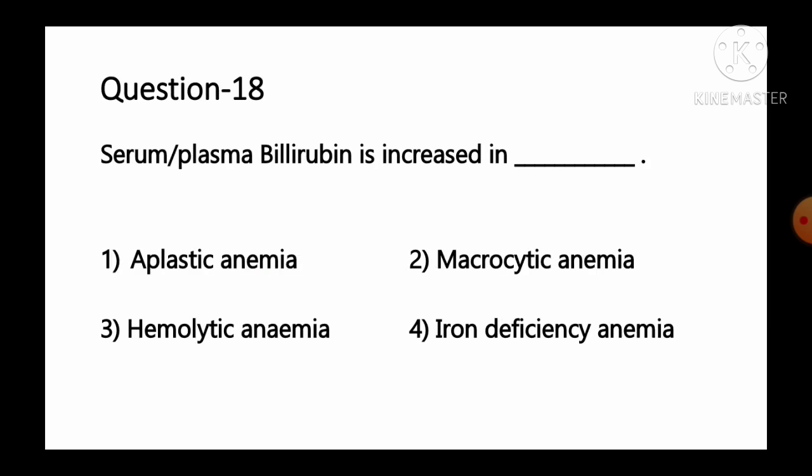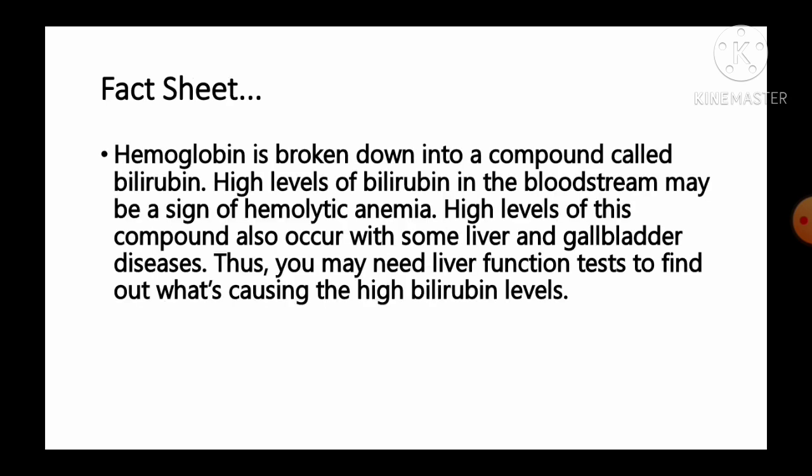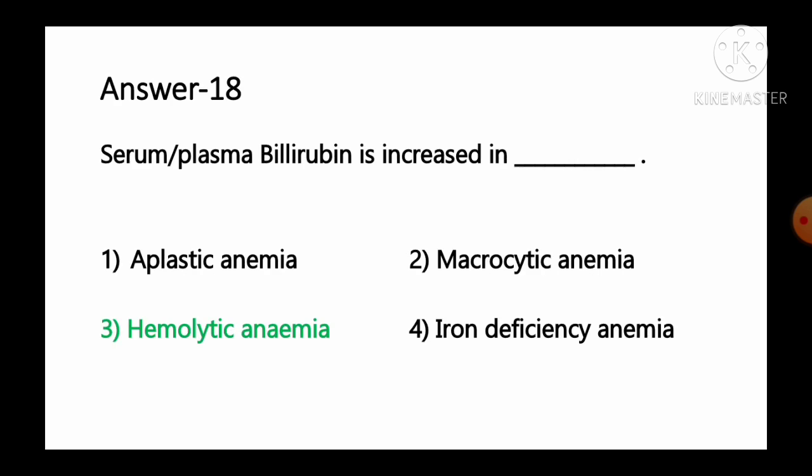Question number 18: Serum or plasma bilirubin is increased in — option 1 aplastic anemia, option 2 macrocytic anemia, option 3 hemolytic anemia, option 4 iron deficiency anemia. Hemoglobin is broken down into a compound called bilirubin. High levels of bilirubin in the bloodstream may be a sign of hemolytic anemia. High levels also occur with some liver and gallbladder diseases. So option number 3, hemolytic anemia, is the correct answer.